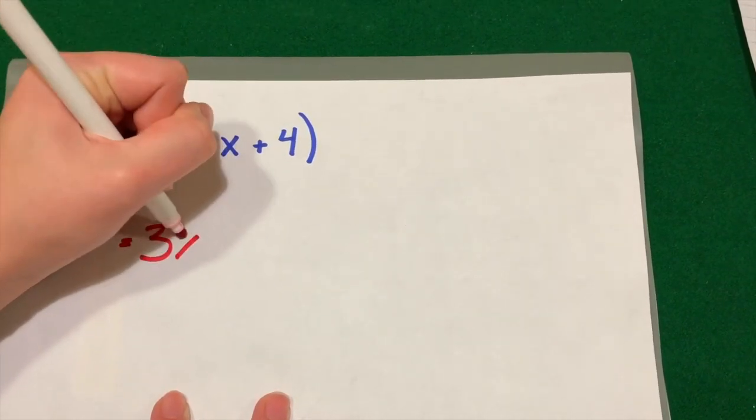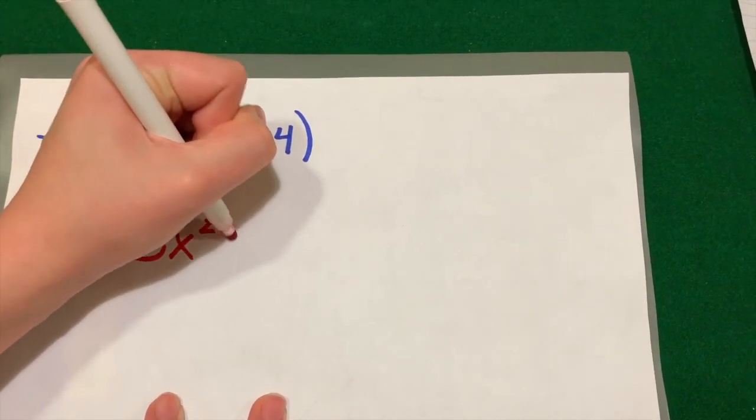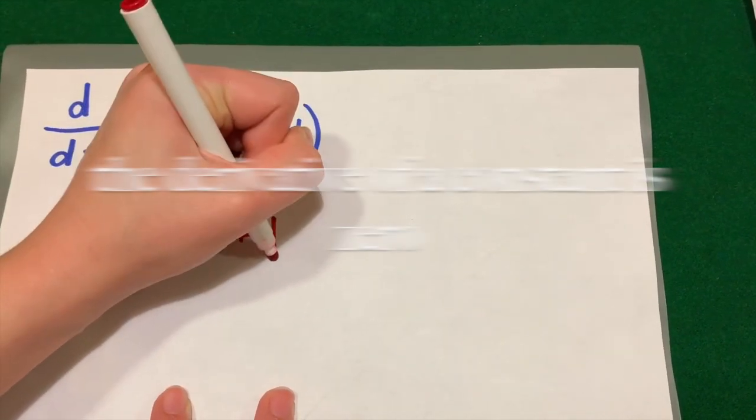You put the power in the front, then subtract the previous power by one. So x cubed becomes 3x squared. Since x has a power of one, you replace it by one.